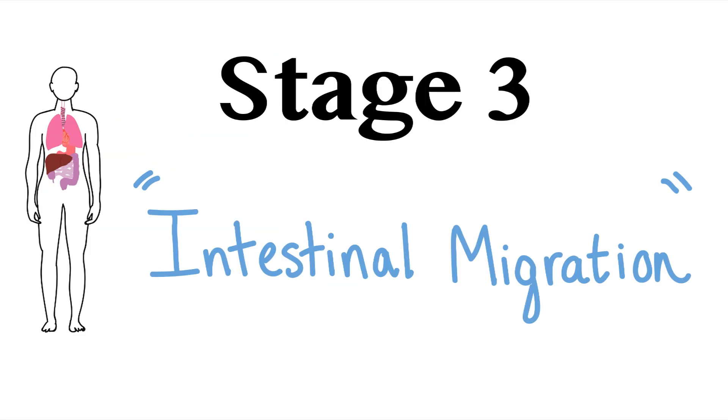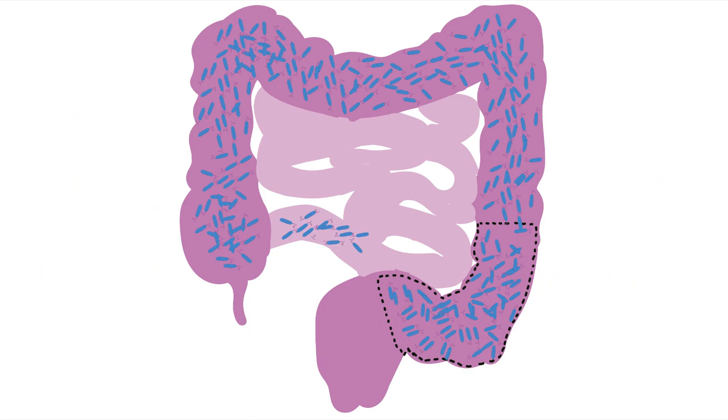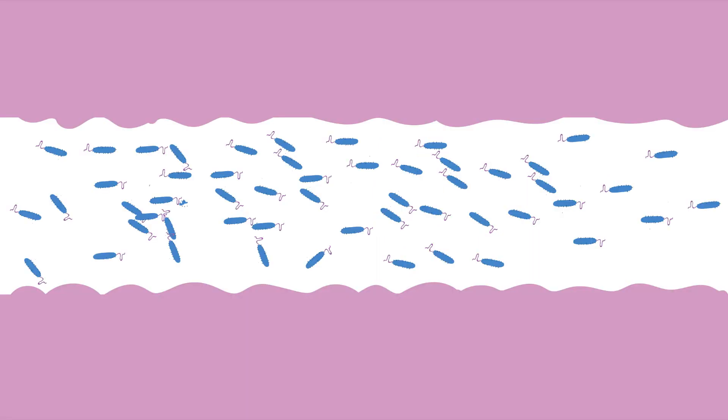And the final result of not eating fiber is stage 3, intestinal migration. With no competition in sight, they continue to grow and migrate upwards in your large intestine to find more protein and lipids in your small intestine. Large colonies of bacteria aren't supposed to be here and when they do colonize in the small intestine, it becomes a condition known as small intestine bacterial overgrowth.